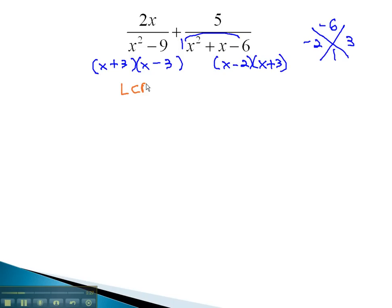Our LCD, we recall, is found by taking all the factors that appear: x plus 3, x minus 3, x minus 2. And you notice the x plus 3 is already part of the LCD, so there will be no need to list it twice.